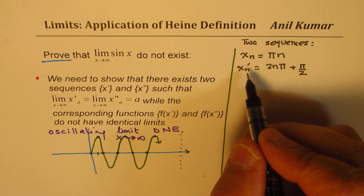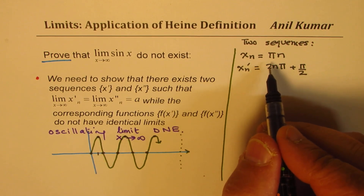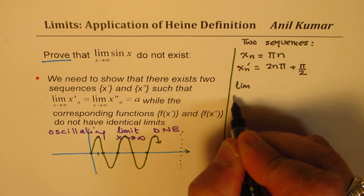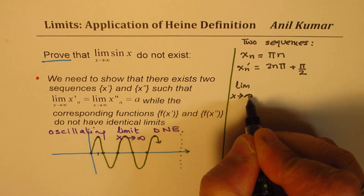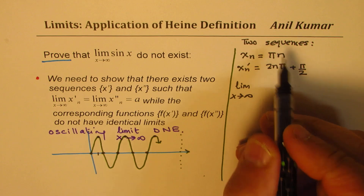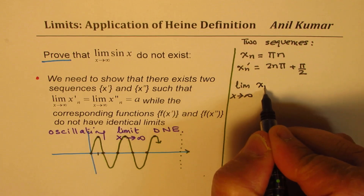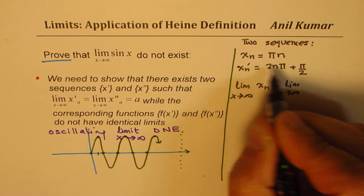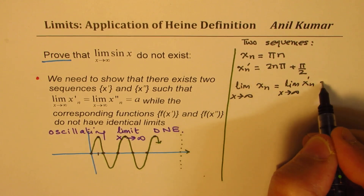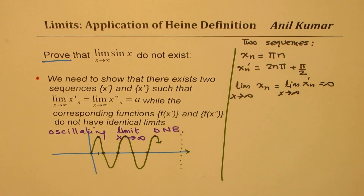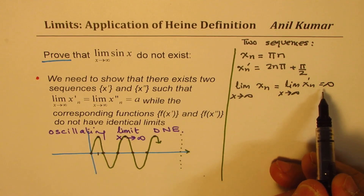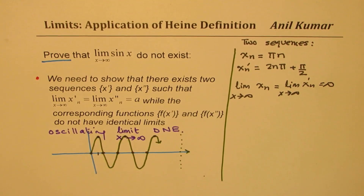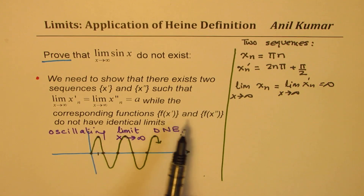Now if you analyze these two sequences, the limit as x approaches infinity for the first sequence xn = nπ is also equal to the limit as x approaches infinity for the second sequence xn', and both are infinitely large. So they are both the same — they are both infinite.